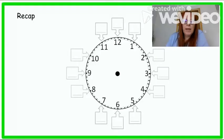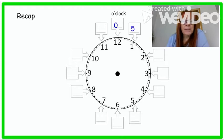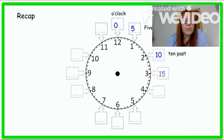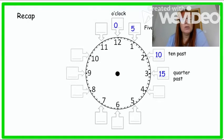A bit of a recap on what we've learnt so far. When the big hand is pointing towards 12, no minutes have gone past and we say it's o'clock. When the minute hand is pointing towards the 1, we say 5 minutes have gone past and it's 5 past. When the minute hand is pointing towards the 2, we say 10 minutes have gone by and it's 10 past. When the minute hand is pointing towards the 3, we say 15 minutes have gone by and we say it is quarter past.